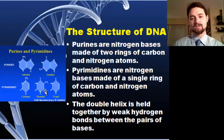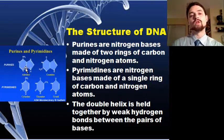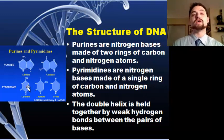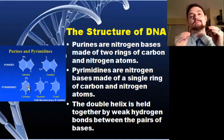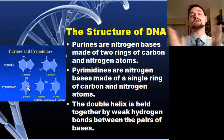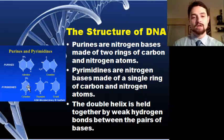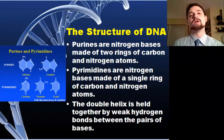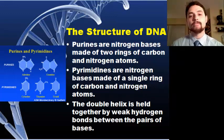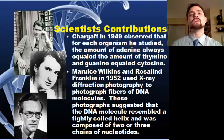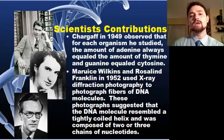The double helix is held together by weak hydrogen bonds between those pairs of bases. A purine will always attach to a pyrimidine, so you always have three rings total holding together the middle of the DNA strand. These are weak hydrogen bonds — enough to hold it together, but they can be split apart without too much energy in the cell.